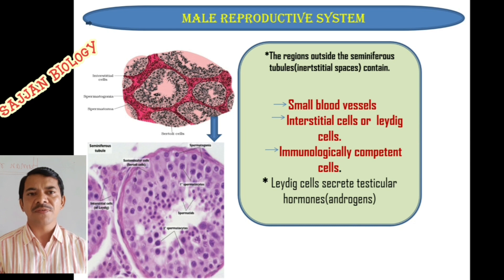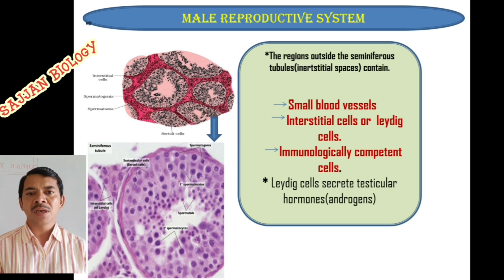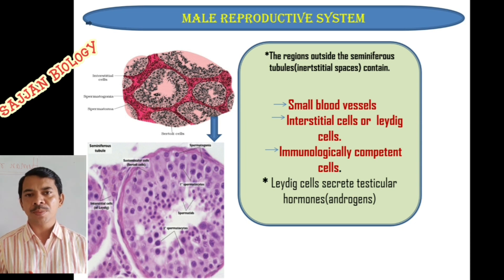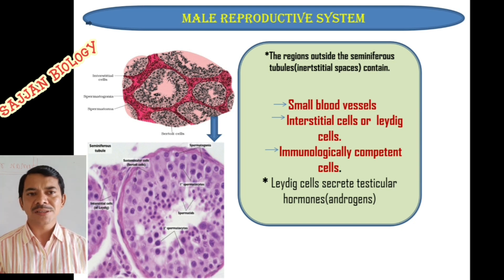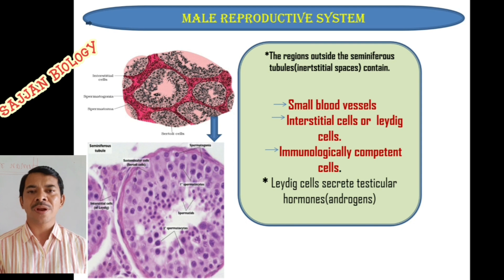Outside the seminiferous tubules are the interstitial spaces. These interstitial spaces contain small blood vessels, interstitial cells (also called Leydig cells), and immunologically competent cells. The blood vessels supply blood, and the interstitial cells — Leydig cells — secrete testicular hormones called androgens.